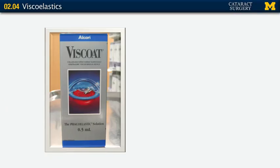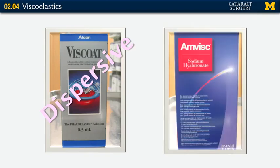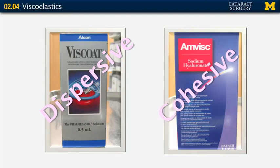Now let's talk about my favorite combo — what I use every week in the OR. Viscoat — cohesive or dispersive? If you said dispersive, you're right. Look right here: it's made with chondroitin sulfate and also has a little sodium hyaluronate. And Amvisc — cohesive or dispersive? Cohesive. These are the two viscoelastics I use to do the soft shell technique, which we'll talk about here in just a second.